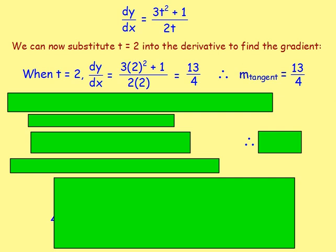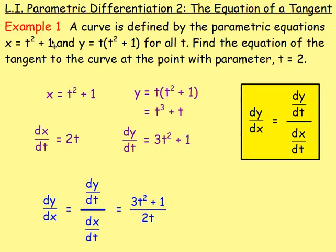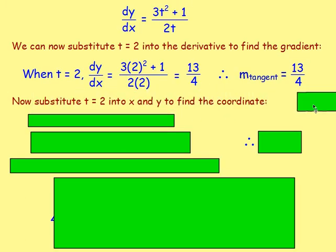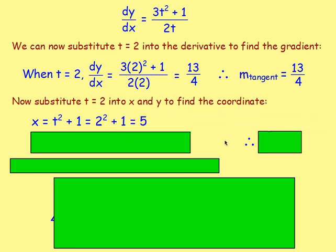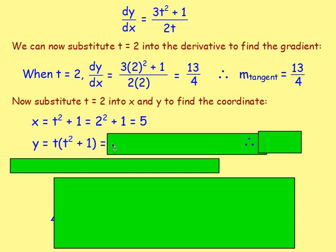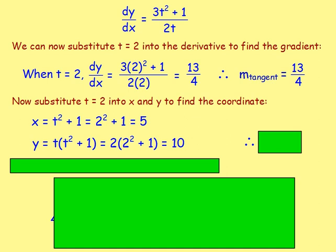Gradient-point-equation. We have the gradient; now we need the point. We know t equals 2, and we were given formulas for x and y, so we substitute t equals 2 into both. x equals 2 squared plus 1 equals 5. y equals 2 bracket 2 squared plus 1 equals 10. So the coordinate is (5, 10).